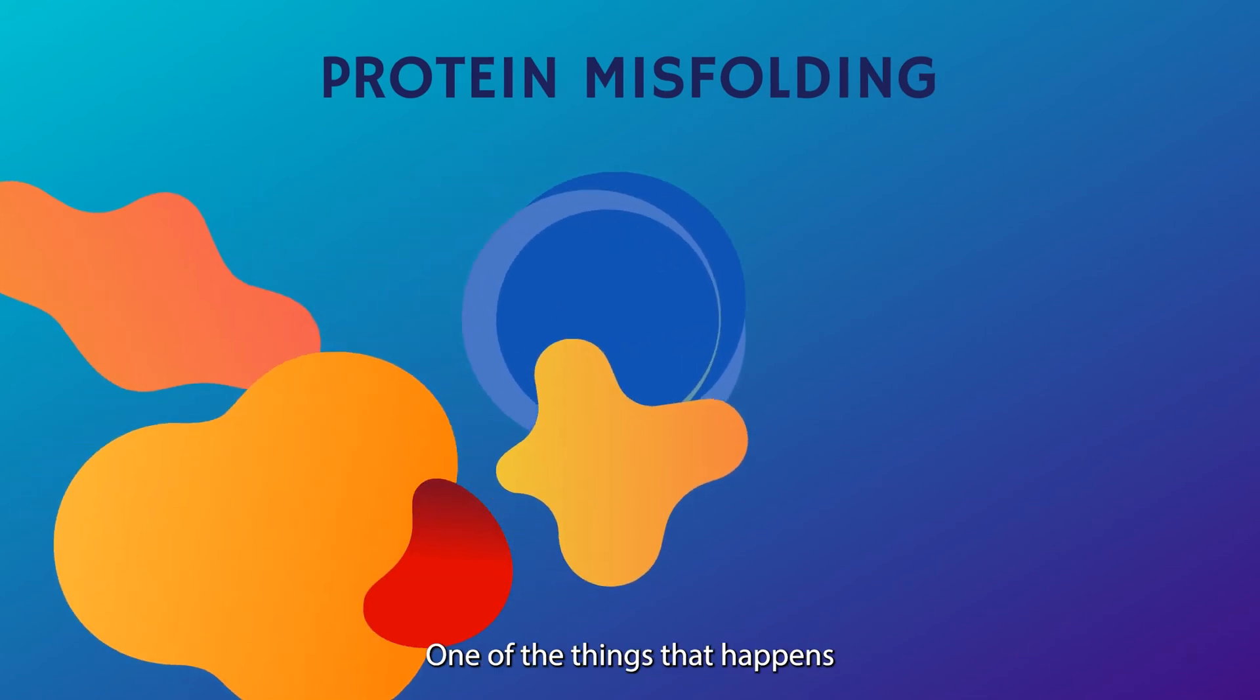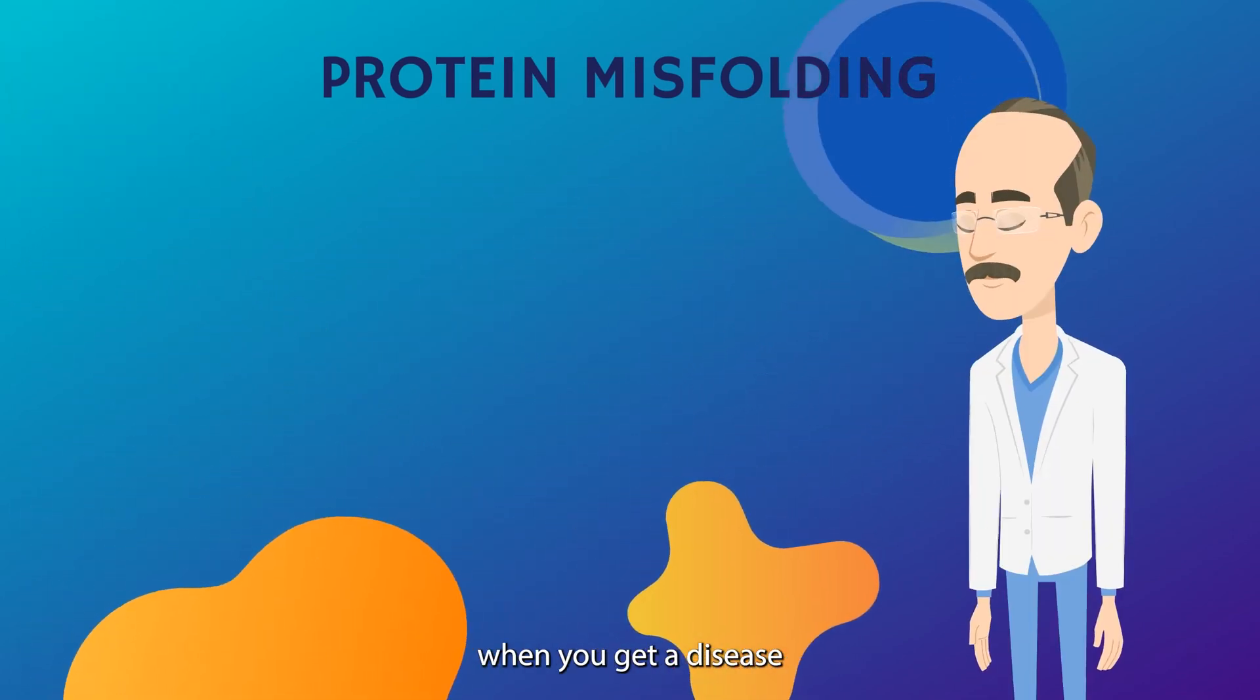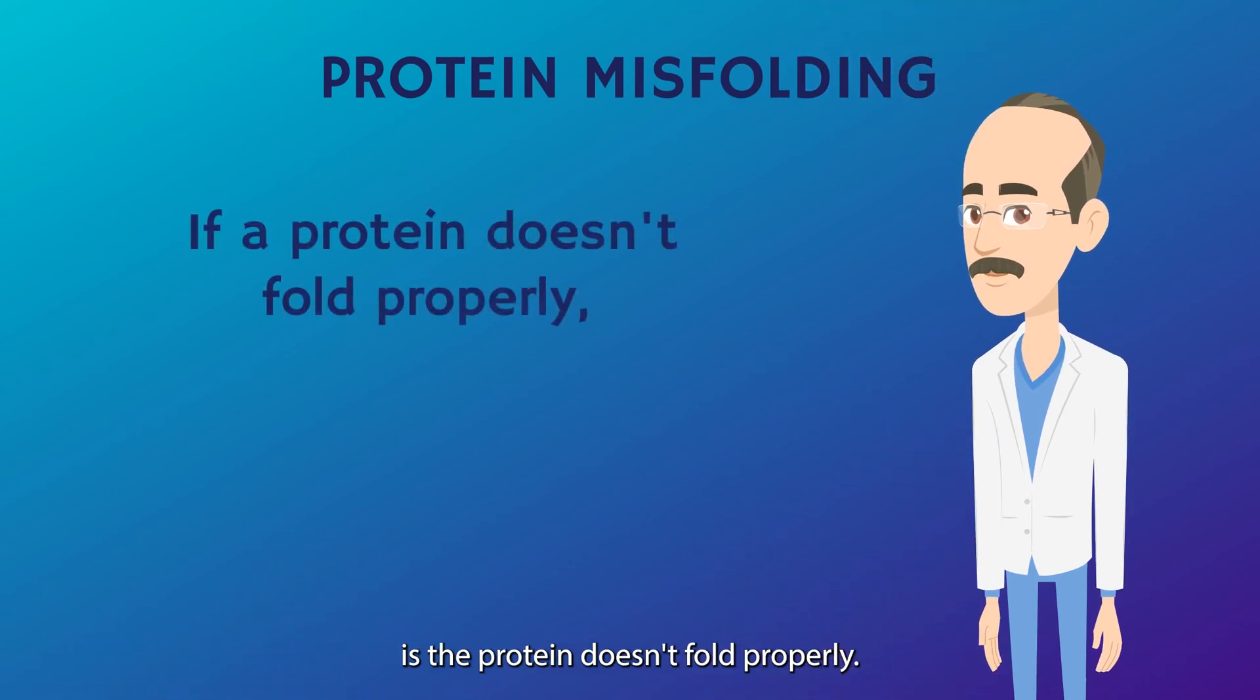One of the things that happens when you get a disease mutation in a protein is the protein doesn't fold properly. If it can't fold properly, it can't do its job.